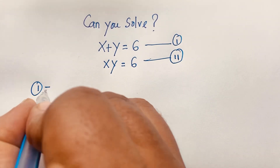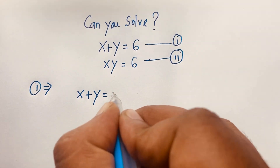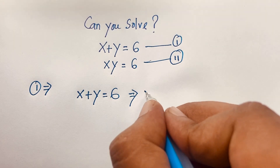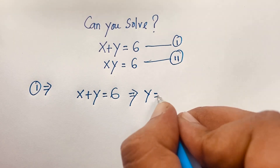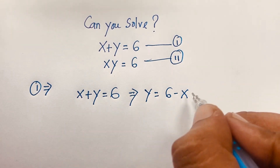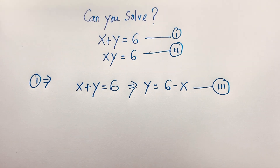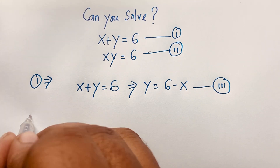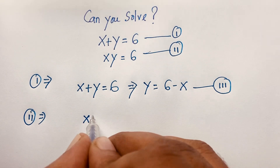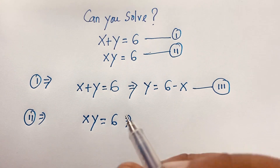According to the first equation, x plus y equals 6, so I can rewrite this as y is equal to 6 minus x — I just move the x to the other side, making it negative x. This is our third equation. Our second equation is xy equals 6.